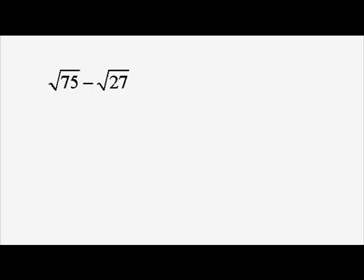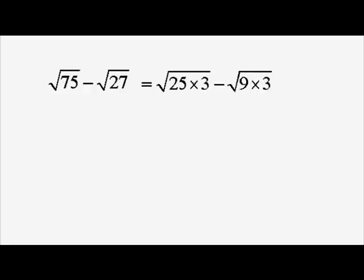Here's another example using the same kind of simplification, this time with a minus sign between the two. Root 75 can be written as root 25 times 3, and root 27 can be written as root 9 times 3. Now 25 and 9 are square numbers — we can square root them and take them outside. So we get 5 root 3 minus 3 root 3, which simplifies to 2 root 3.